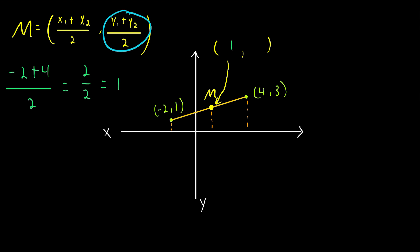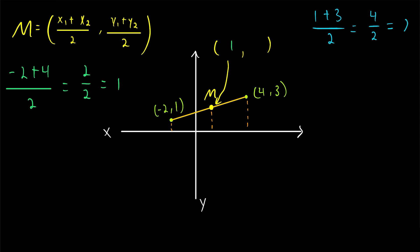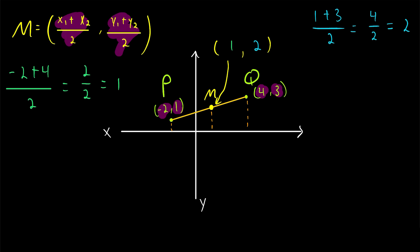To find the y-coordinate, we do the same thing — we take the average of the y-coordinates of these two points. So that's 1 plus 3 divided by 2. The order of addition doesn't matter; we could have written 3 plus 1 instead. 3 plus 1 in the numerator is 4, divided by 2 equals 2. So the y-coordinate is 2. It's as easy as that: 1, 2 are the x and y-coordinates respectively of the midpoint M. So to find the midpoint of two points P and Q, we just take the average of the x-coordinates and the average of the y-coordinates. Really pretty straightforward.